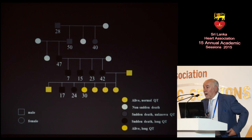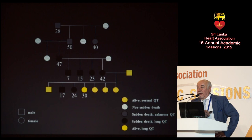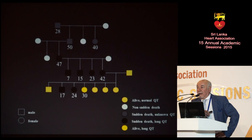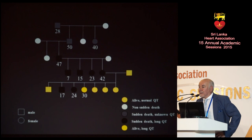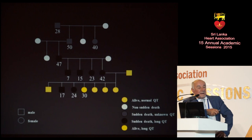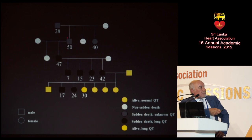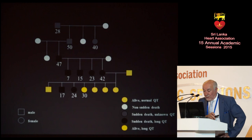Here you see an example of how this is inherited in an autosomal dominant manner. In yellow are those alive with a normal QT; in black are those with sudden death or long QT. You see it's not jumping one generation — it's affecting all generations. There were some sudden deaths without knowing the value of the QT, but almost certainly there was a problem transmitted through this family, with a statistically 50% chance of getting long QT syndrome.